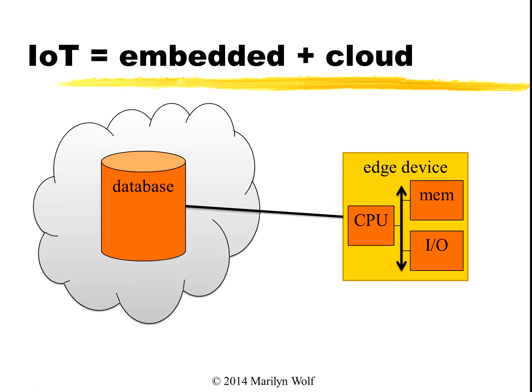To look into it in a little more detail, our edge devices are embedded computing systems that have processors, memory, and IO that talk to real world devices. In the cloud we have servers and, most importantly, we have databases. These databases can store all sorts of information that they receive from the edge devices. That data can be used not just for collection but can also be used to analyze and figure out how to control our edge devices.